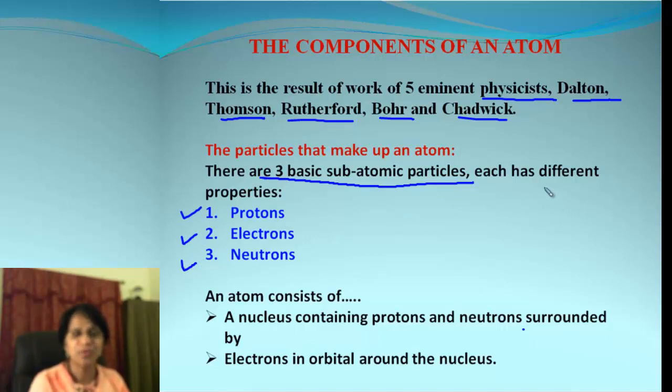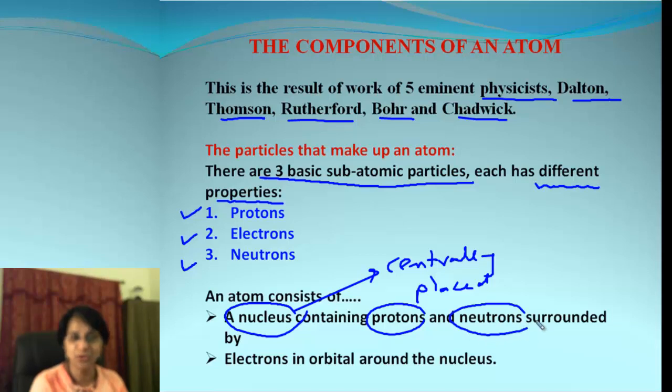And each one of these particles has completely different properties. Okay, before we go further, let's sum it up. Each atom will be consisting of clearly two different parts. One is nucleus, which will be centrally placed. And what does it contain? It will contain protons and neutrons. And where are those electrons? Electrons will be surrounding the nucleus and they'll be constantly in motion.